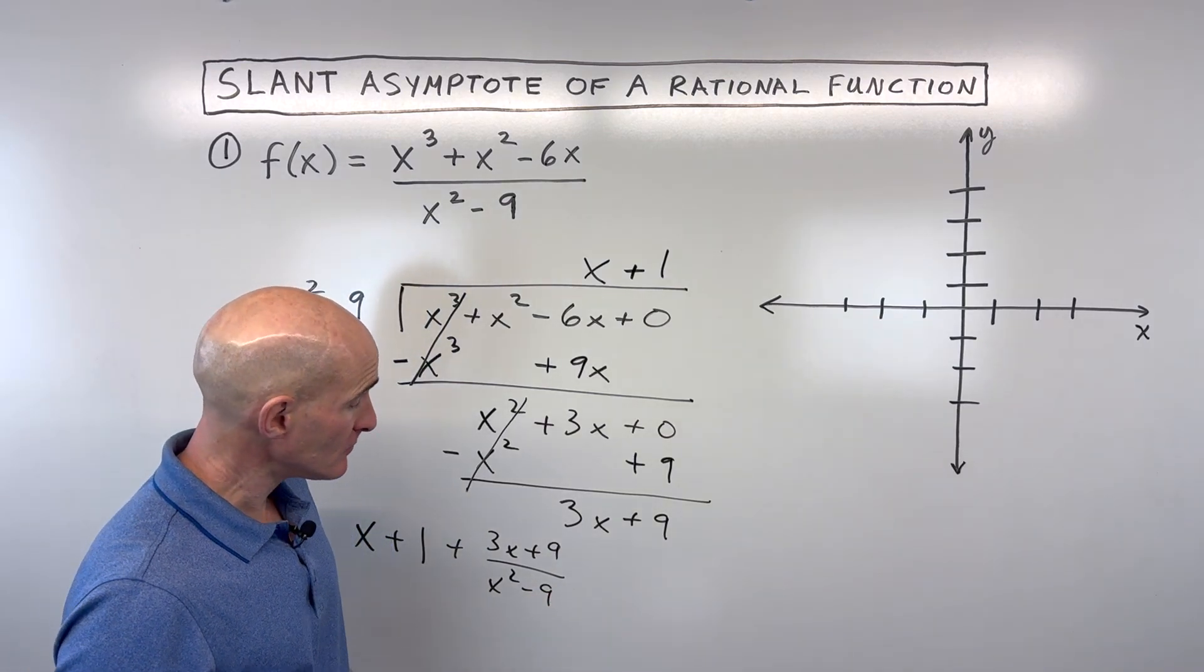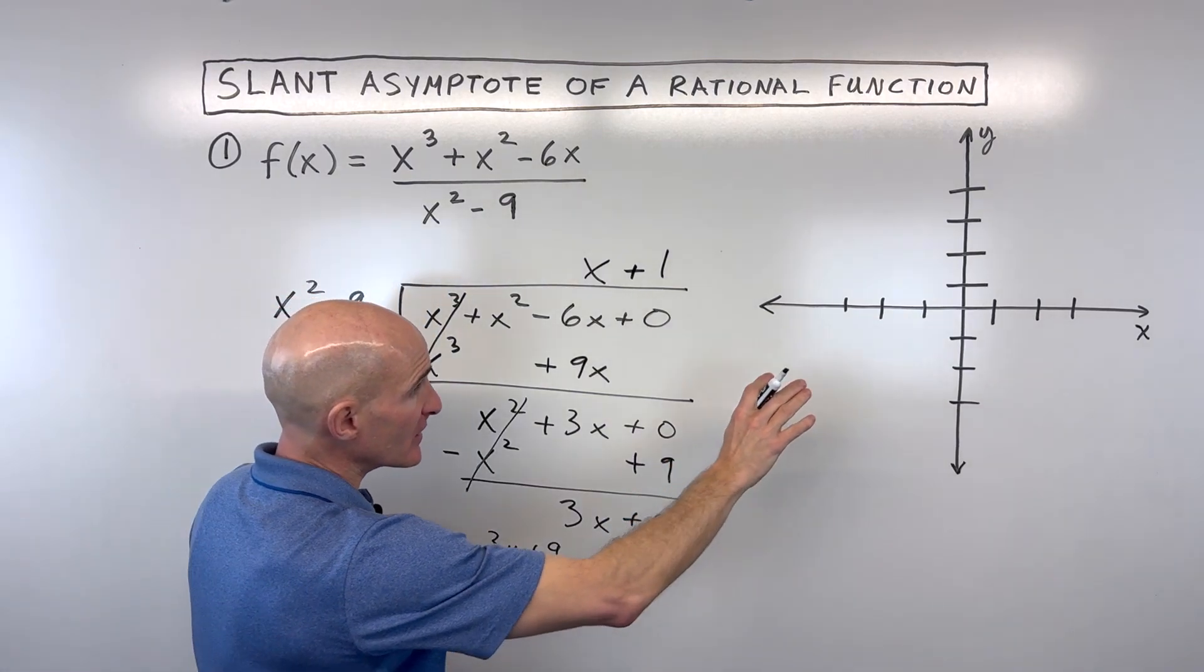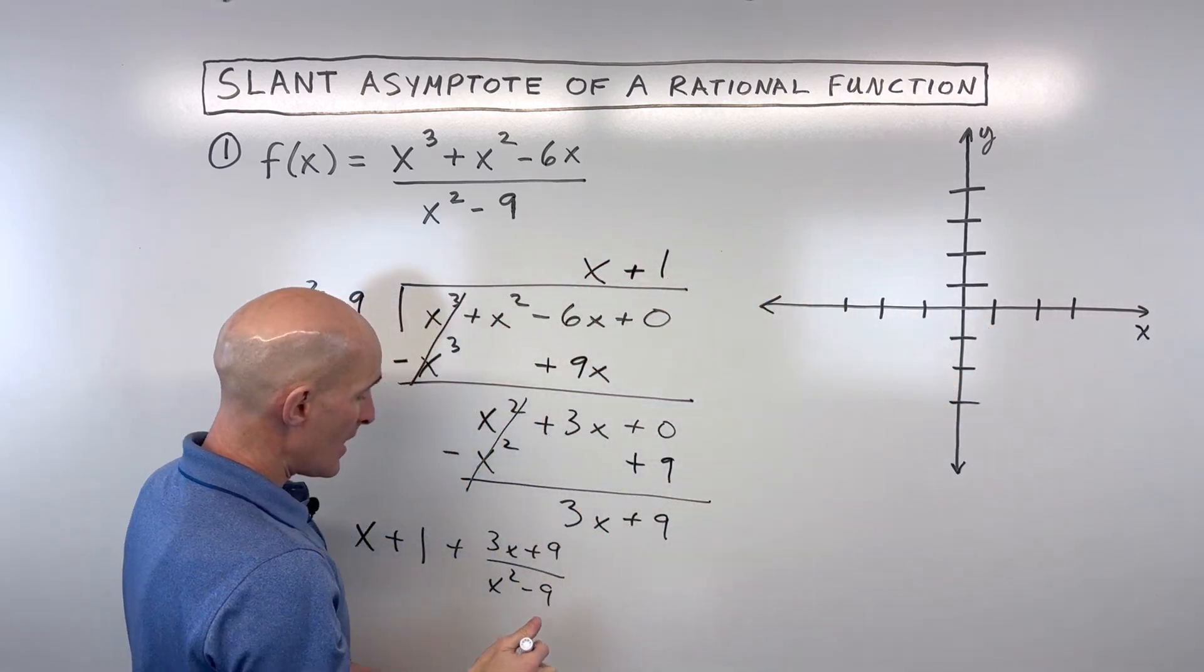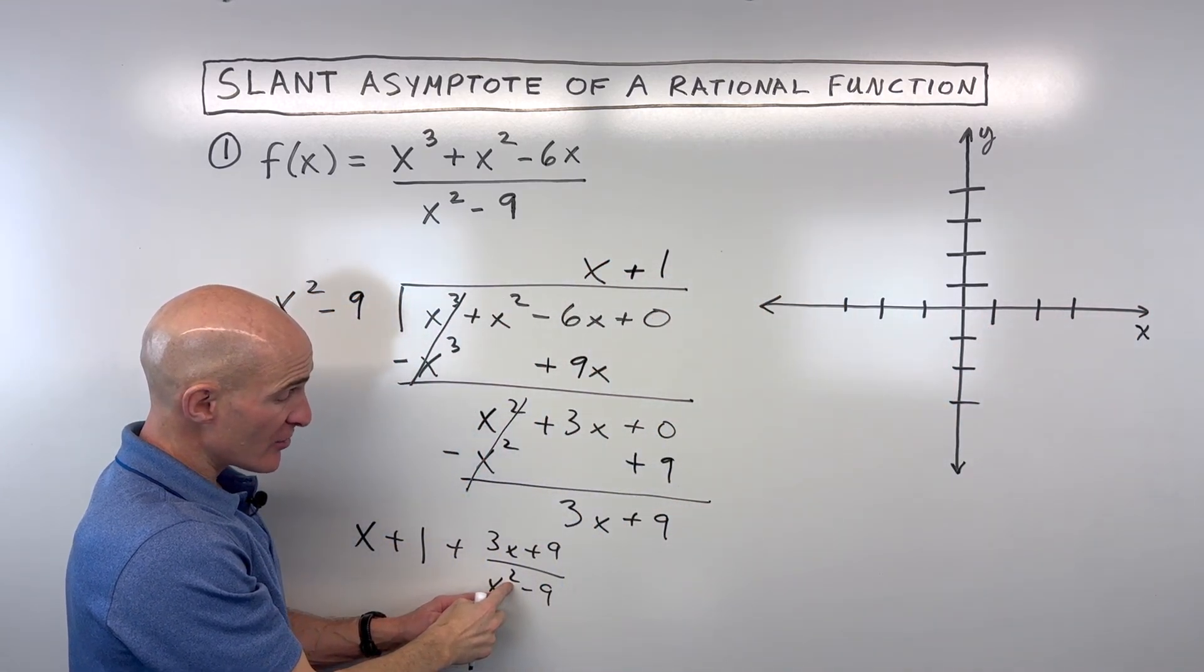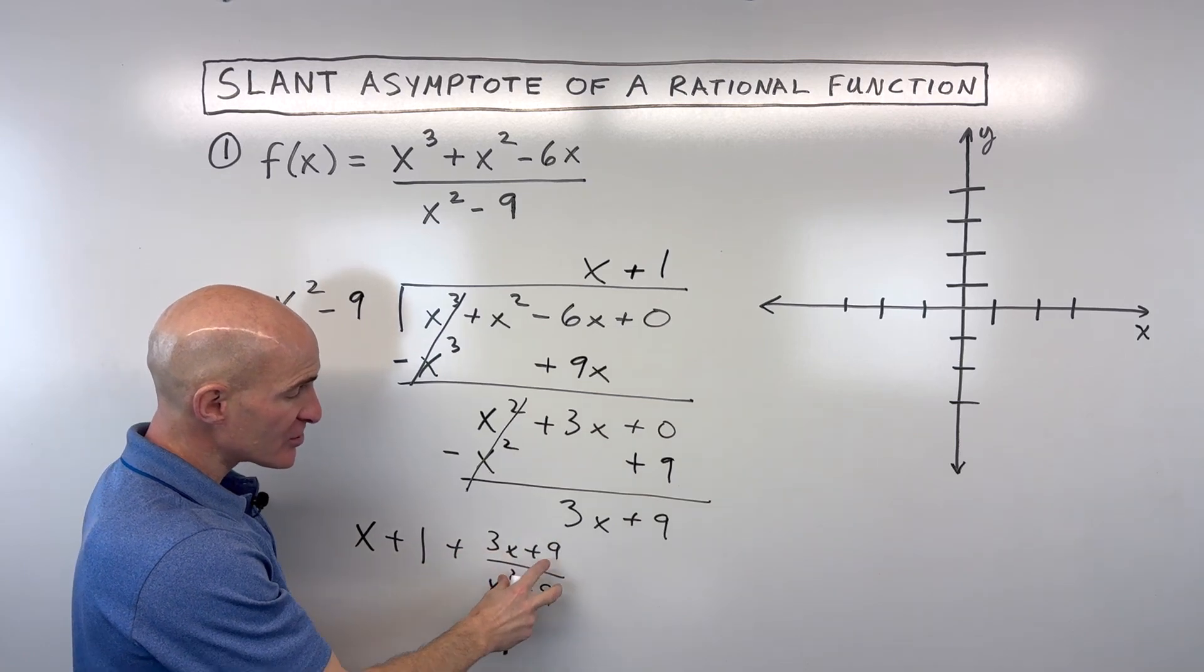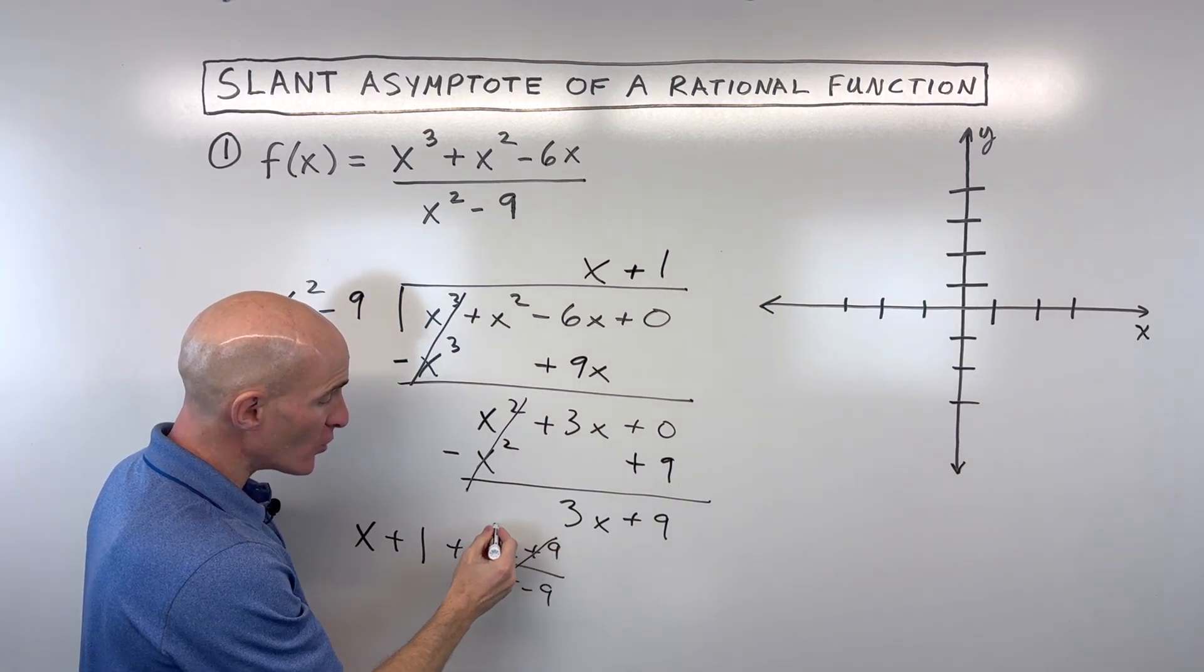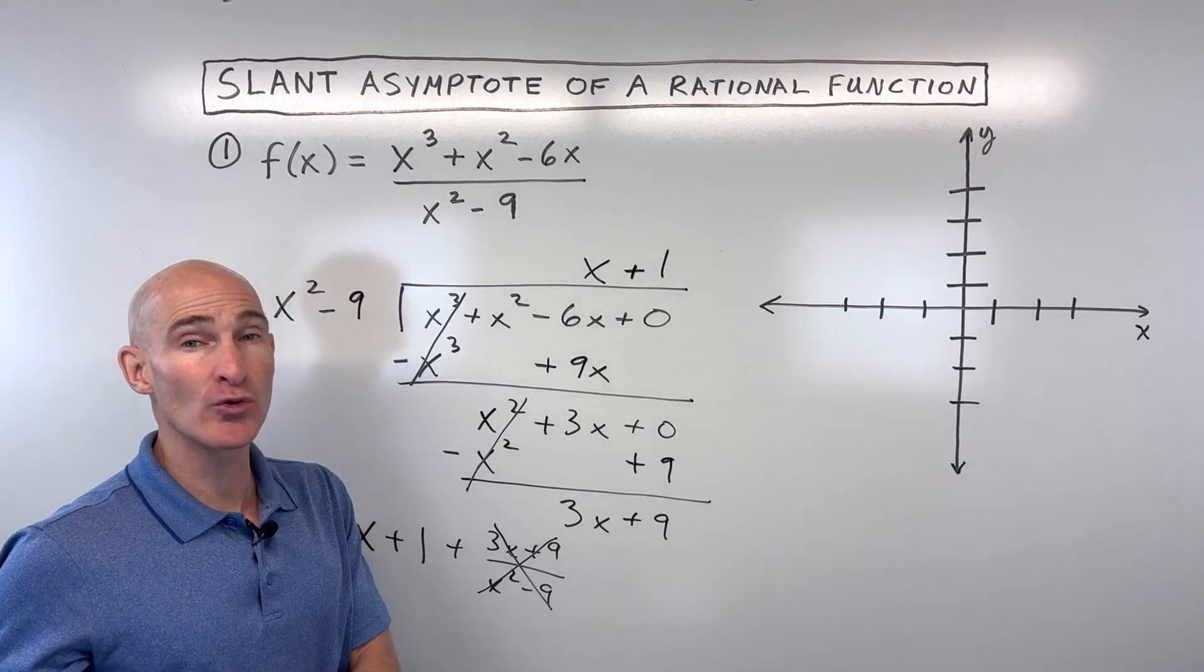Now what happens is as x gets larger and larger, meaning as we go to the right here, because the denominator's degree here is higher than the numerator's degree, this term is going to go to 0. So you'll oftentimes hear people say, just ignore the remainder. And that's why,